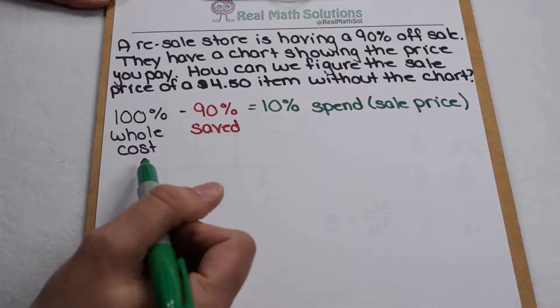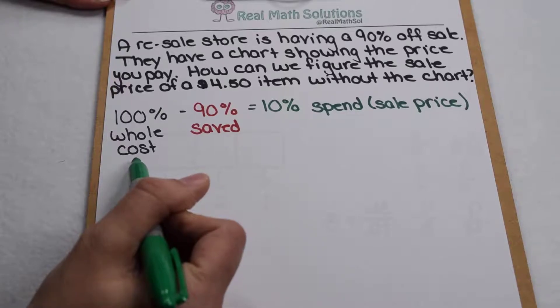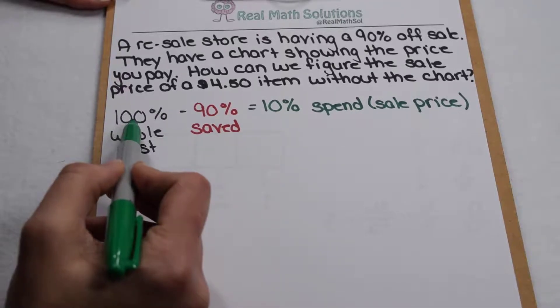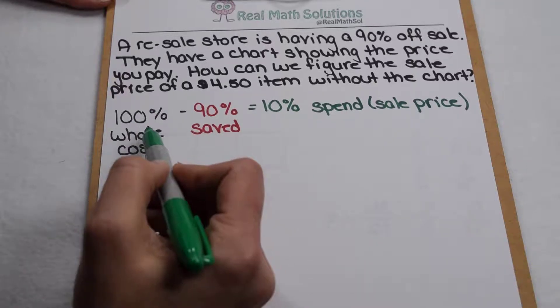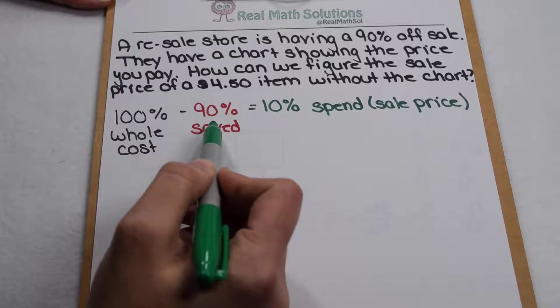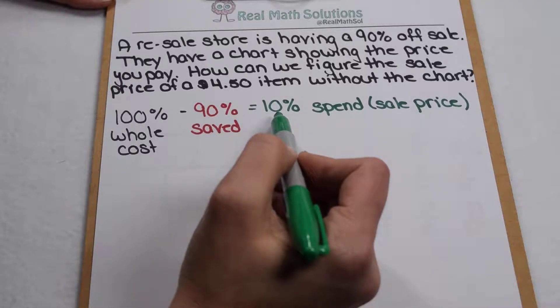Well let's first think about this in terms of percentages. If I was going to pay for the whole cost of the item I would be paying for 100% of it. However I'm going to save 90% of that cost. So 100% minus the 90% that I'm going to save means I'm going to pay for 10% of that item.